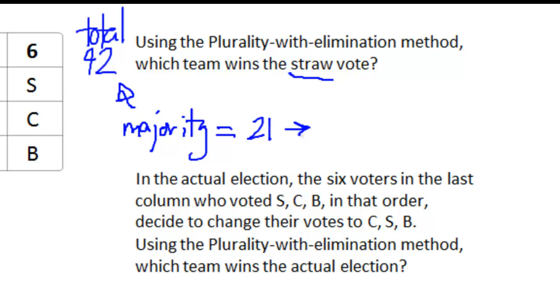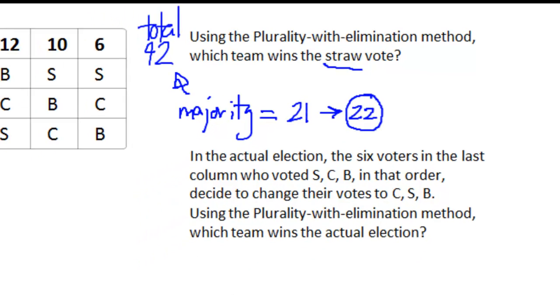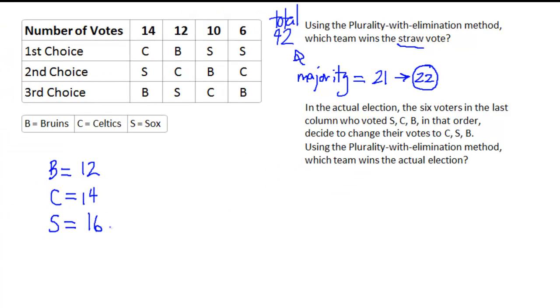So we're going to bump that up to the next whole integer, which is 22. So we're looking for who has a total of 22 or more first place votes, and obviously that's no one right now. So since the Bruins have the smallest number, they get eliminated.